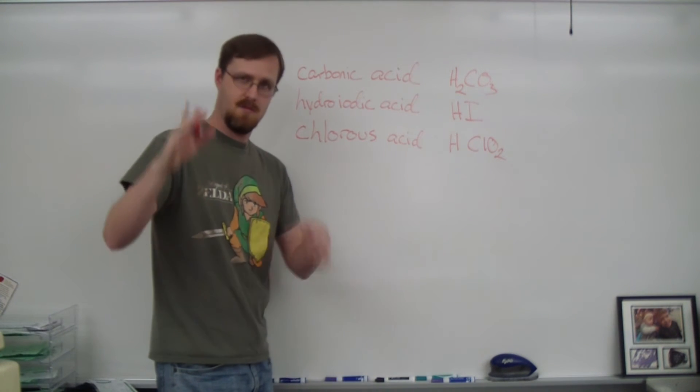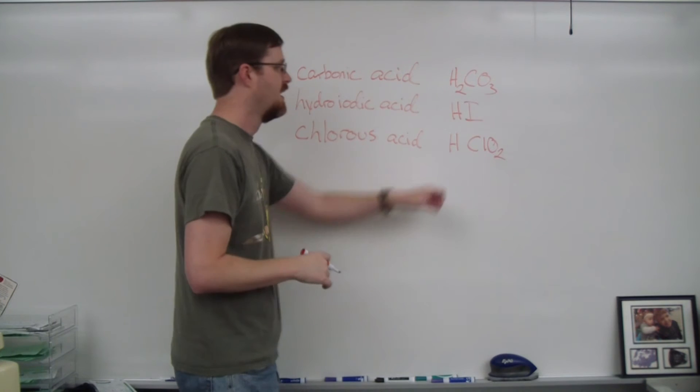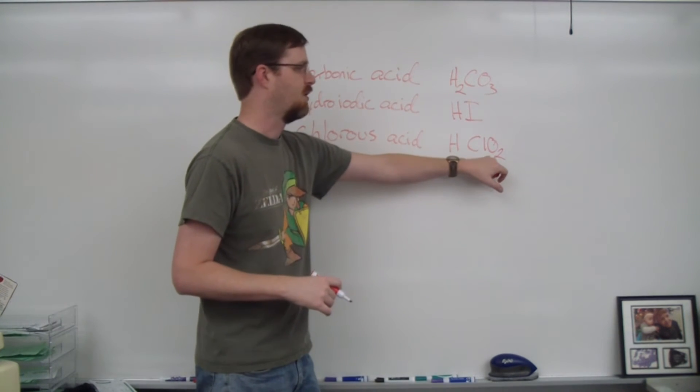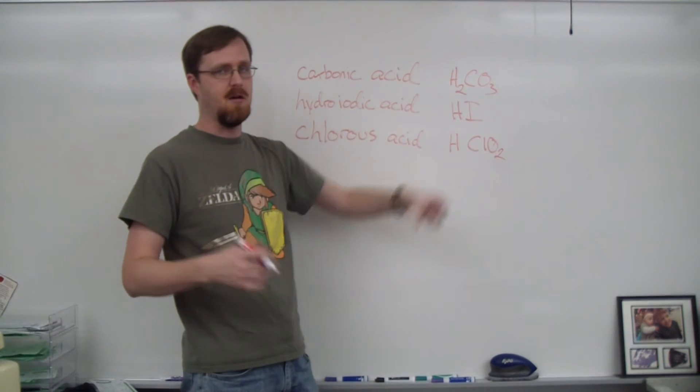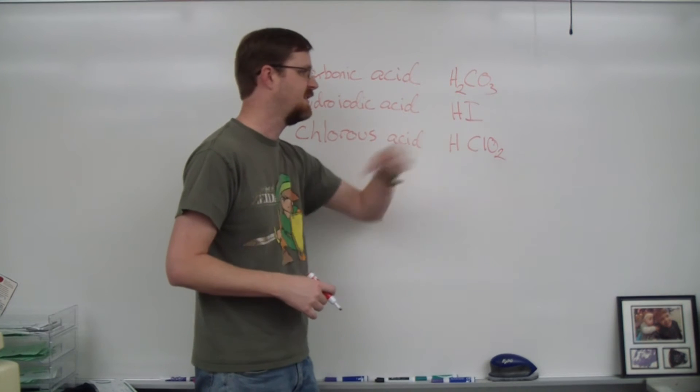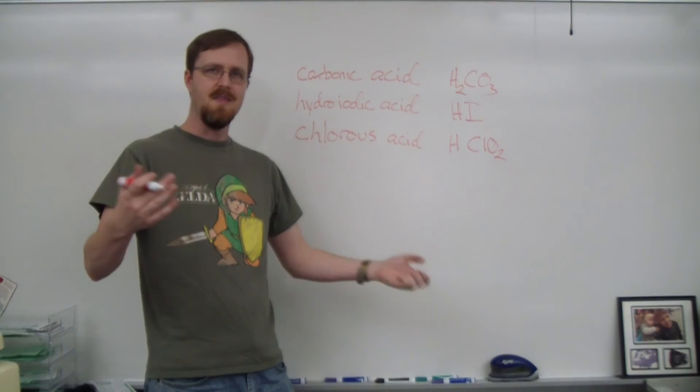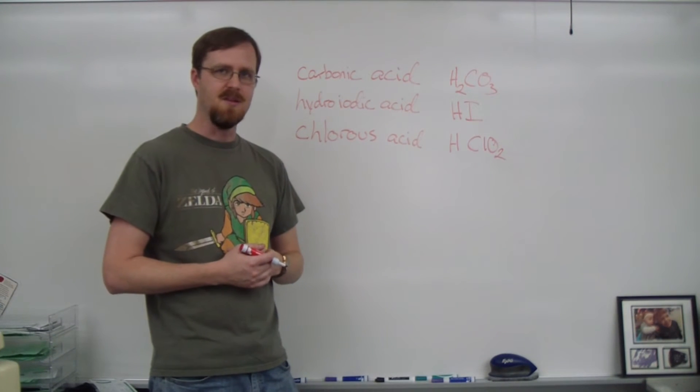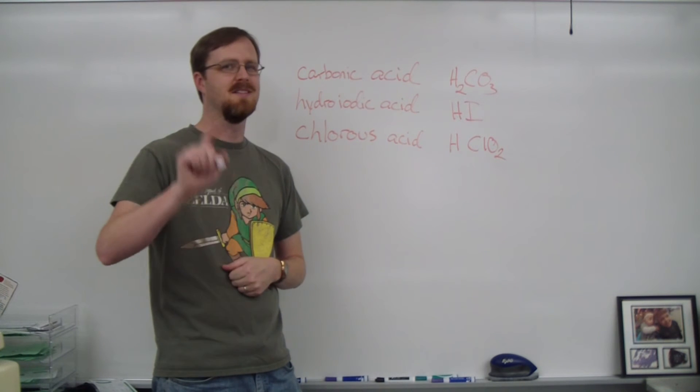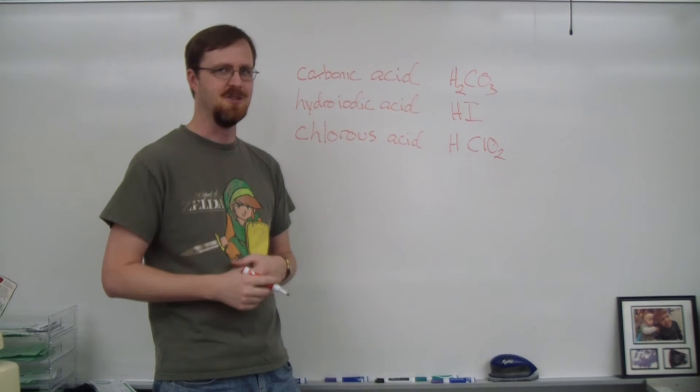And if you don't remember that, you've got a reference chart that's got all the polyatomic ions on there. Hydrogen is plus one. Chlorite is negative one. Again, they already add up to equal zero. So HClO2. And that's how it's done. So I'm going to reset now. And we're going to do the exact same thing except with the bases.